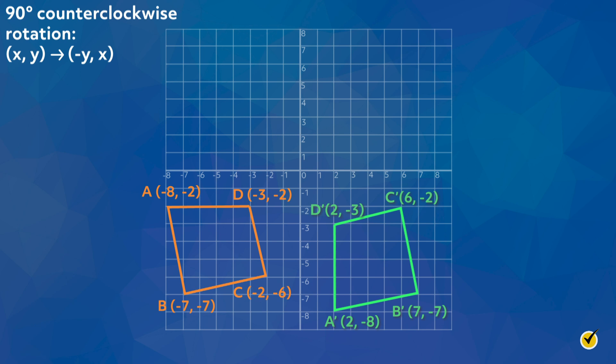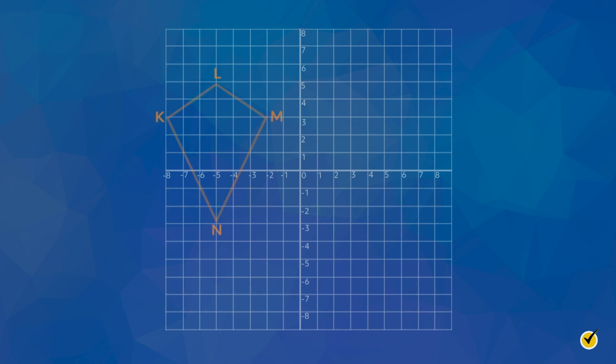Now I want you to try some practice problems on your own. Kite KLMN is shown on the coordinate grid. The kite has been rotated about the origin to create kite K'L'M'N'. Can you identify which rotation of kite KLMN created kite K'L'M'N'?